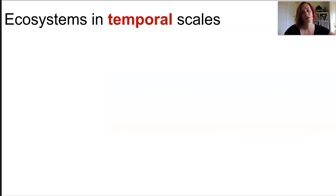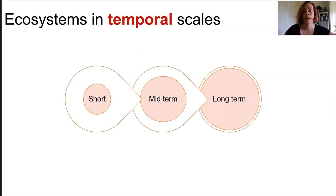If we look at ecosystems through the lens of a temporal scale, we consider change over time. Our temporal scales range from very small to very large, or short to long. Short term is days, mid-term is seasonal, and long term can be years stretching into decades or centuries.